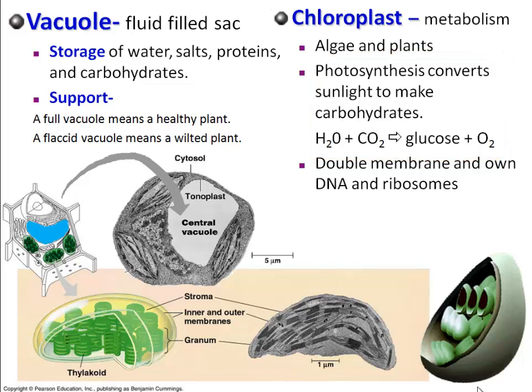You'll also notice, like the mitochondria, that the chloroplast has a double membrane. The inner membrane is folded up and has its own DNA and ribosomes. So the chloroplast, much like the mitochondria, is essentially a cell within a cell.